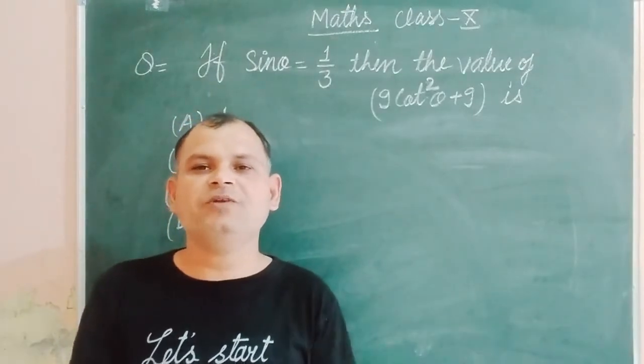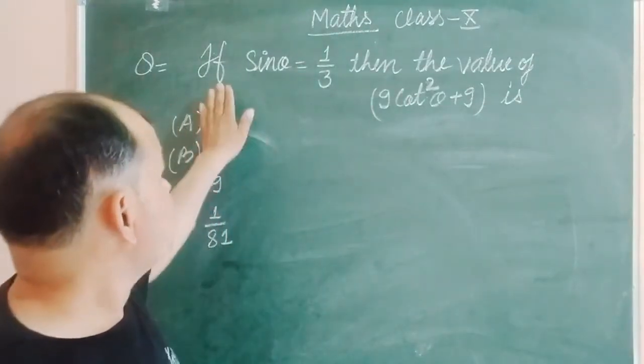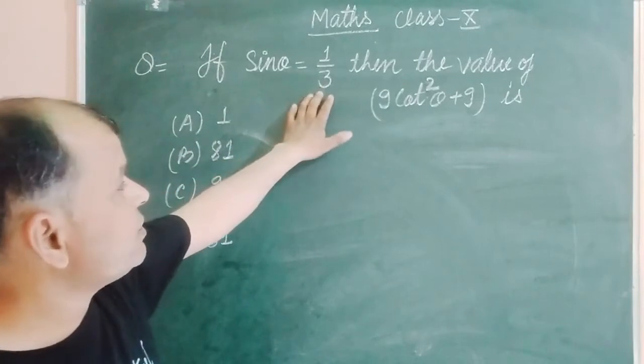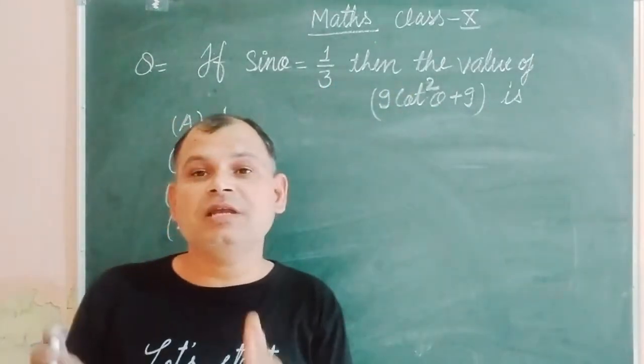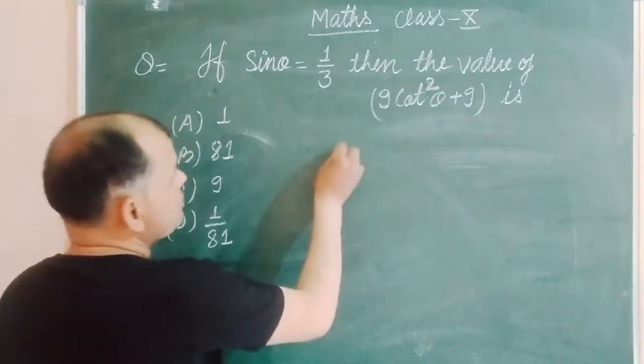In this video we solve a problem. The problem is: if sin θ = 1/3, then find the value of 9cot²θ + 9. So students, this is a very simple problem.